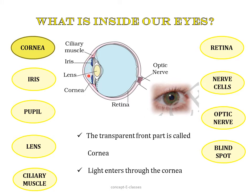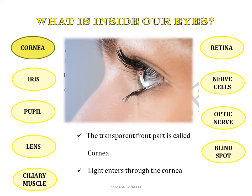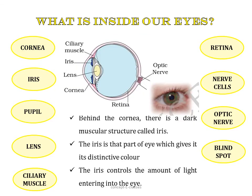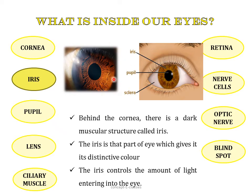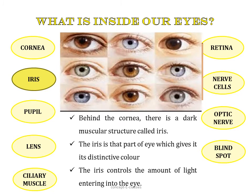The transparent front part of the eye is the cornea — light enters through it, acting like a window. Behind the cornea is a dark muscular structure called the iris. The iris gives the eye its distinctive colour, which differs from person to person — some have black, brown, or blue eyes. The iris controls the amount of light entering the eye. In the iris there is a small opening called the pupil, whose size is controlled by the iris: in bright light the iris reduces the pupil size so less light enters, and in dim light the pupil dilates so more light enters.